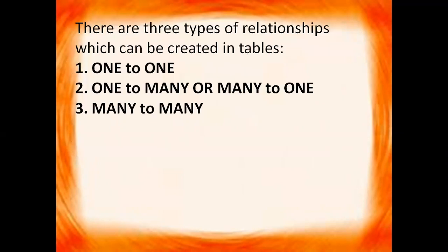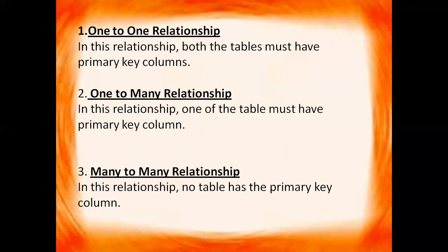There are three types of relationships which can be created between tables: one-to-one, one-to-many, and many-to-many. In a one-to-one relationship, both tables must have primary key columns. In a one-to-many relationship, one of the tables must have a primary key column, and it can be connected to many records of the other table.